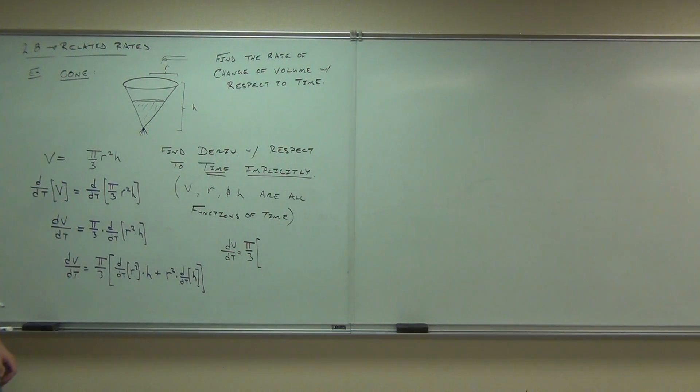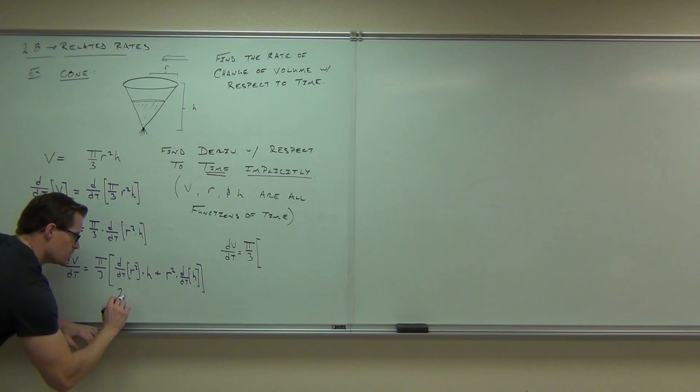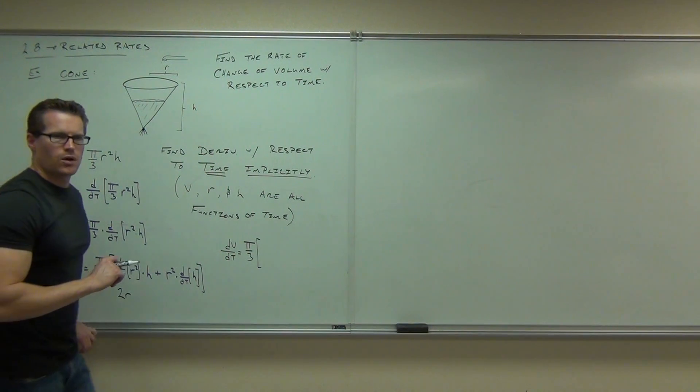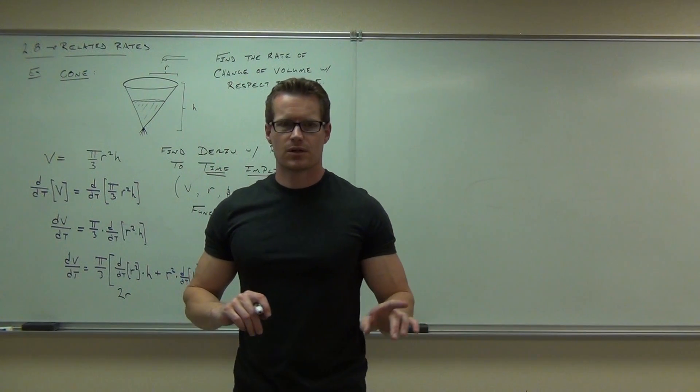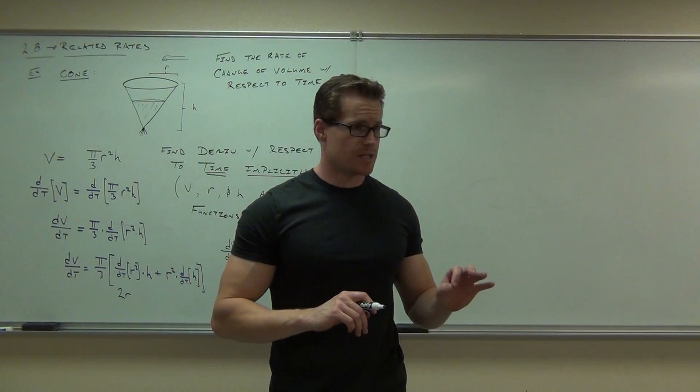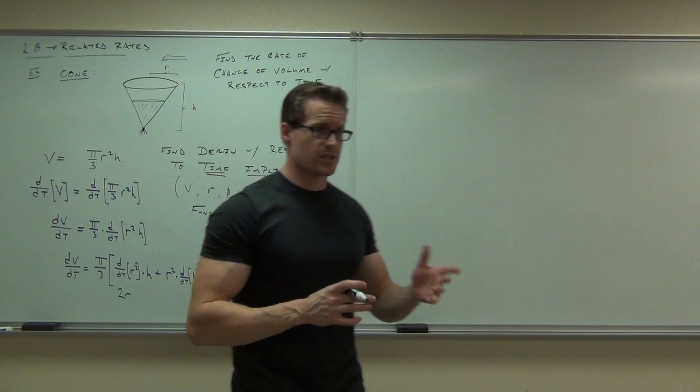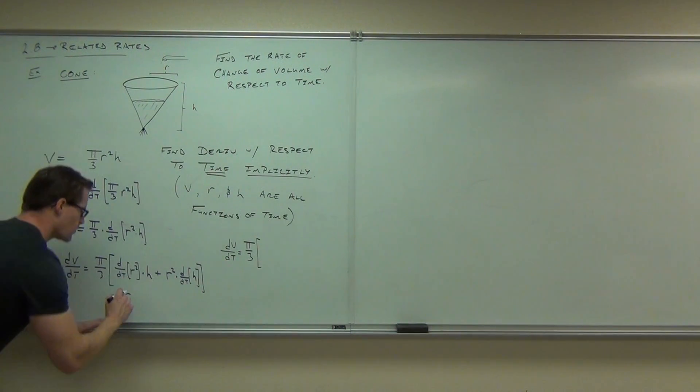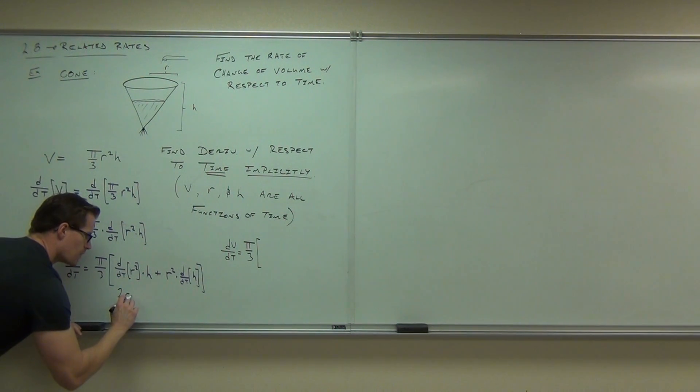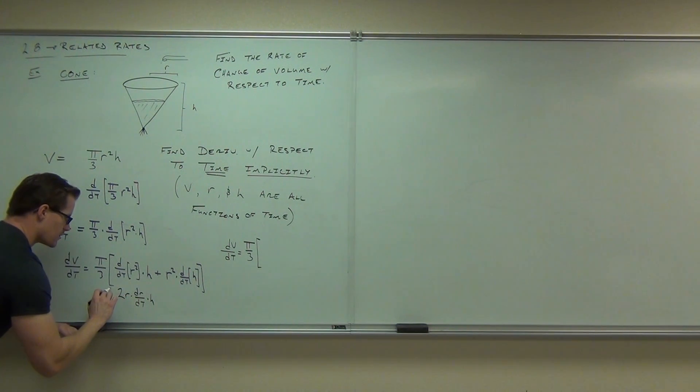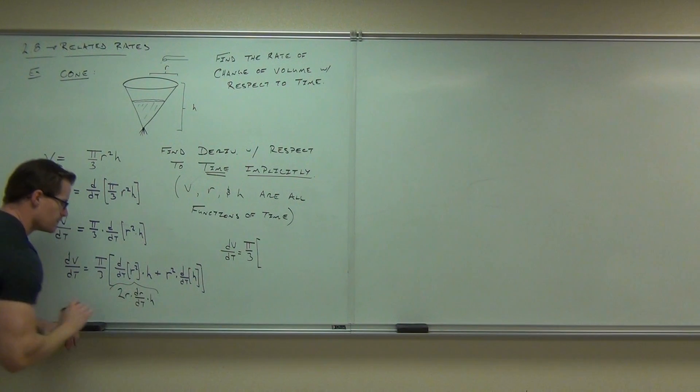When you do this first derivative, this part's going to give you 2R. What else do I need besides the 2R? Besides the H. I need dR, dt. Did you guys all have dR, dt? It's implicit. So you have to have not only 2R, and not only the H, but you're going to get a... This gives you the 2R, dR, dt, times H. That's this piece right here. That's what that gives you.